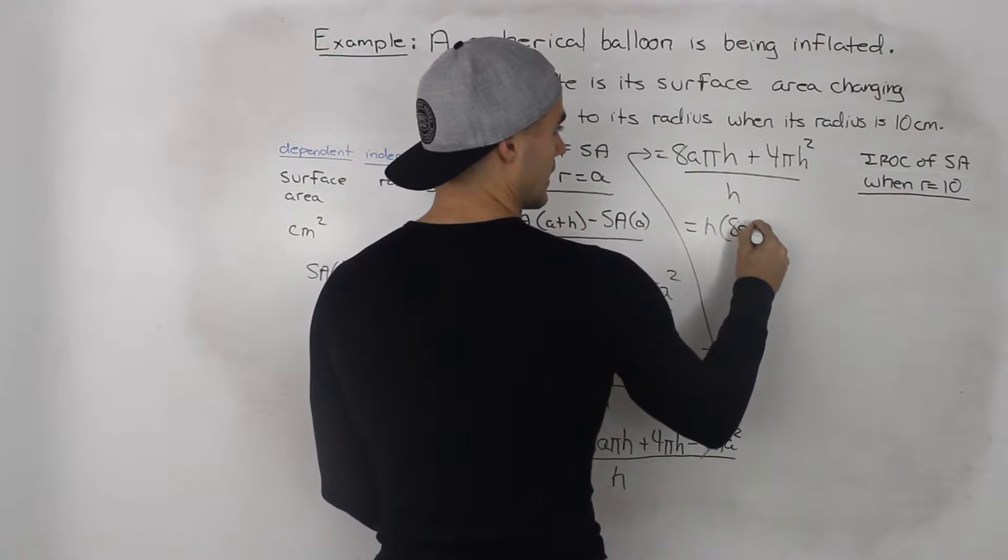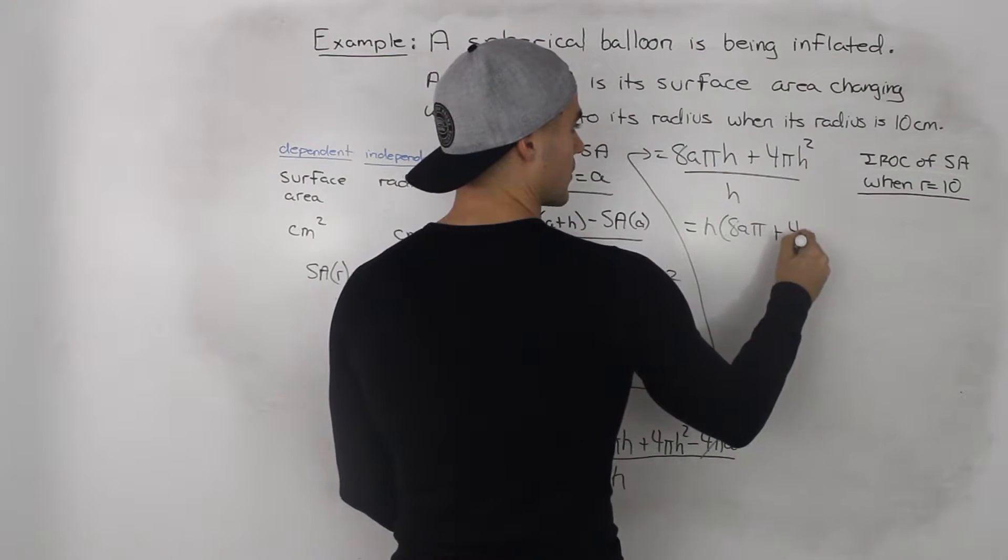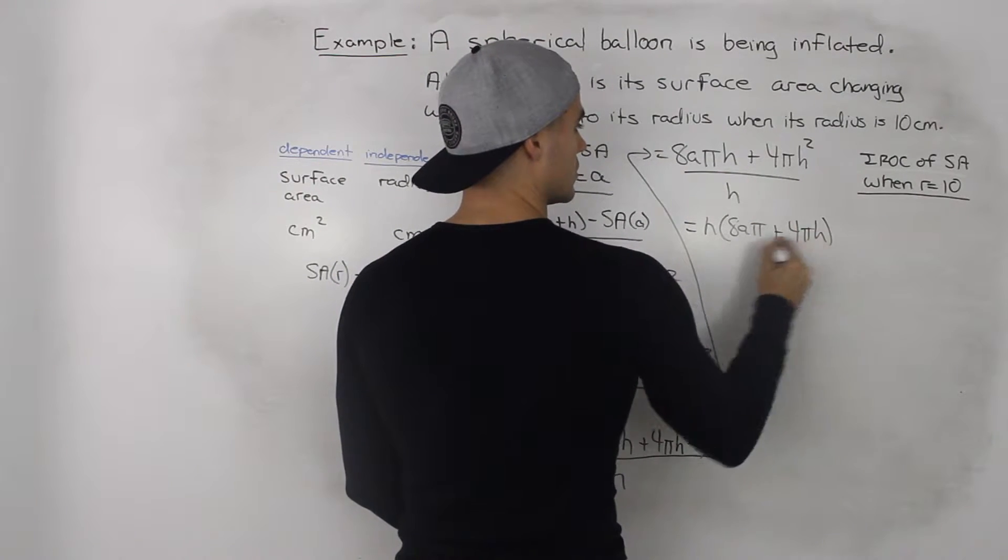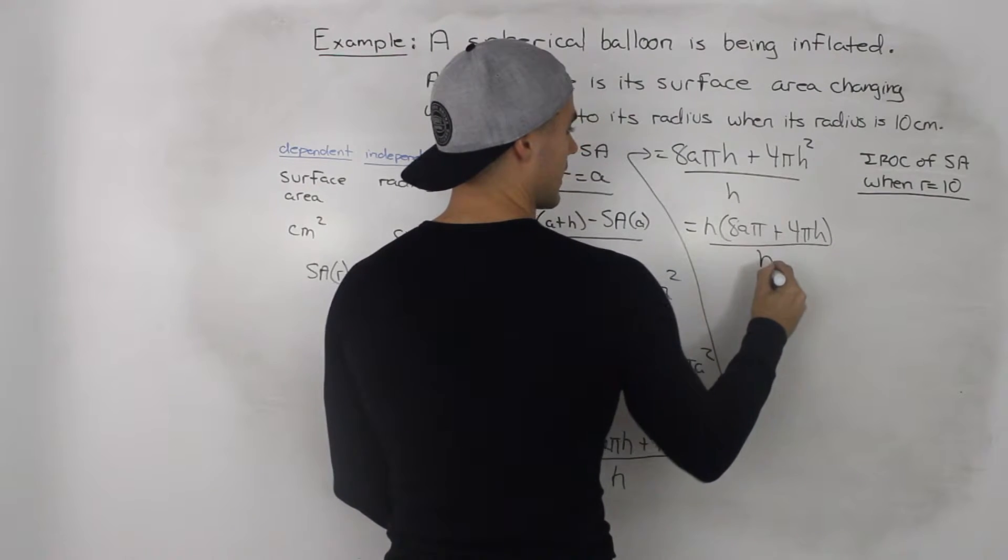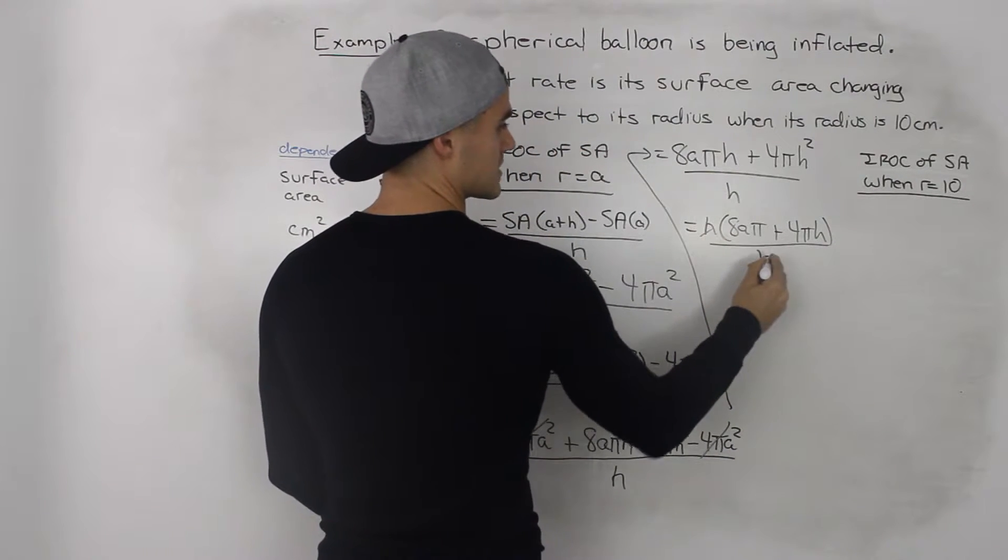So we'd get h(8aπ + 4πh) all over h. H's cancel out.